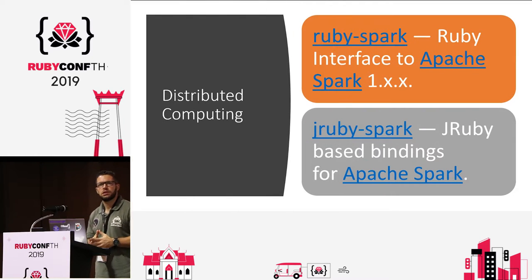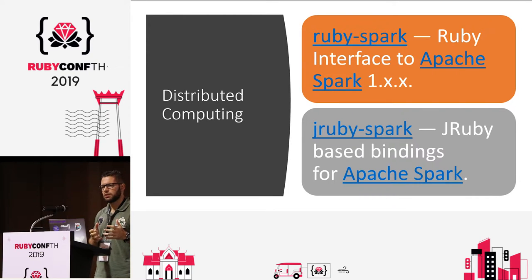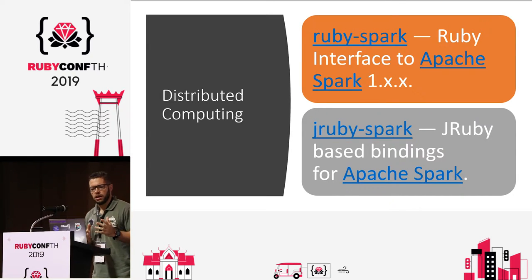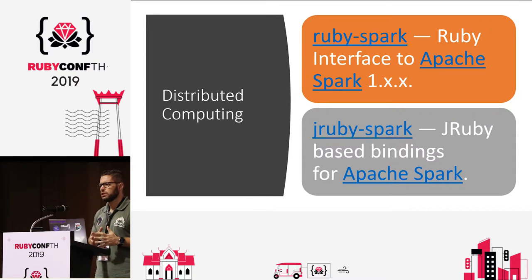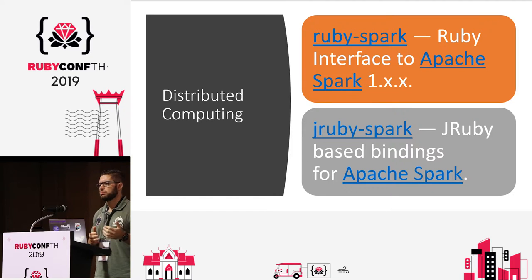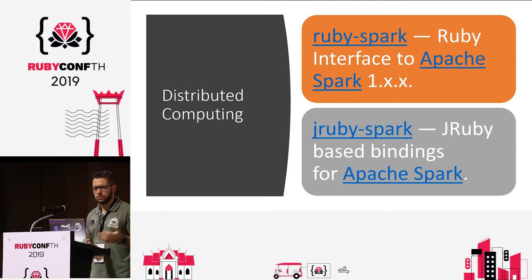We have tools for distributed computing, but here things start to get ugly. Apache Spark is a really great project, but both integration libraries for Ruby and JRuby haven't seen a commit in the last three years. So if you are already using it, great — but if you're starting something new, it's probably not the way to go, because there are open bugs and nobody maintaining the projects.